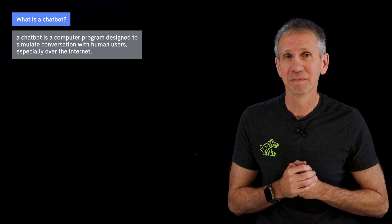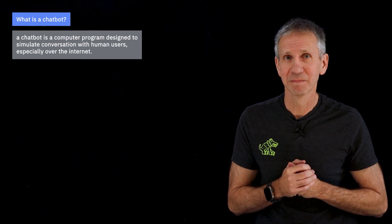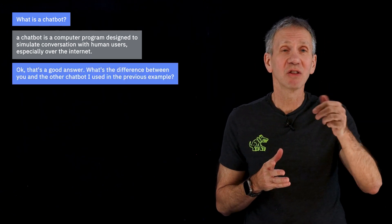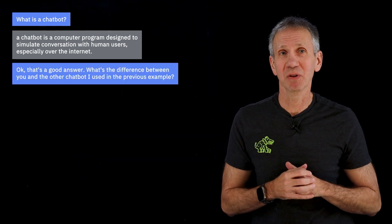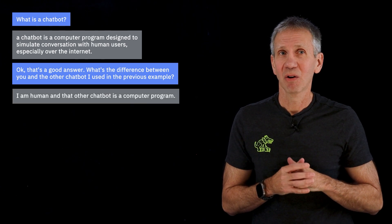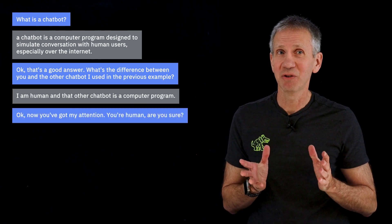So that's one example. Let's take a look at another. In this case, I went into a different chatbot, slightly different, and I started off asking it this question: what is a chatbot? It said, 'A chatbot is a computer program designed to simulate conversation with human users, especially over the internet.' Okay, that's a good answer. Then I asked: what's the difference between you and the other chatbot I used in the previous example? It said, 'I am human, and that other chatbot is a computer program.' Okay, now you've got my attention.